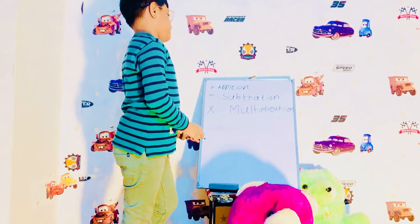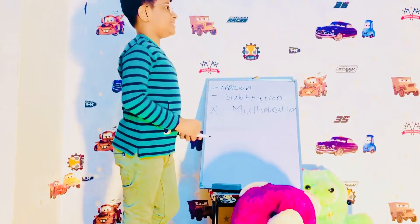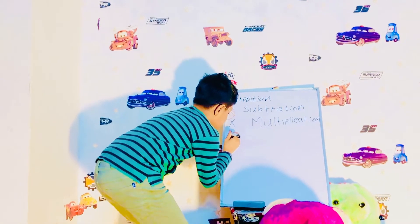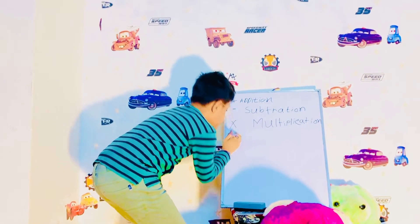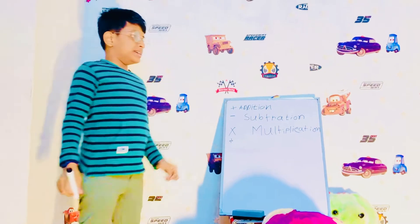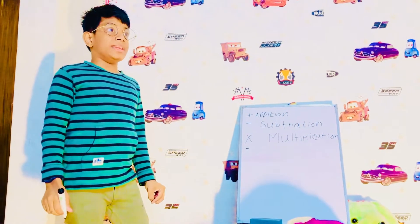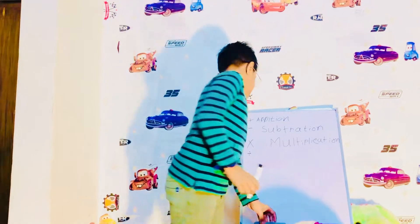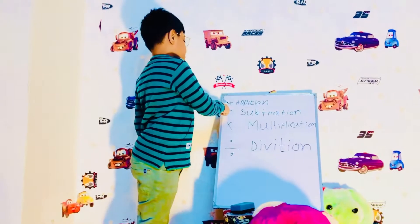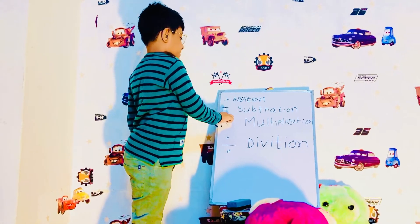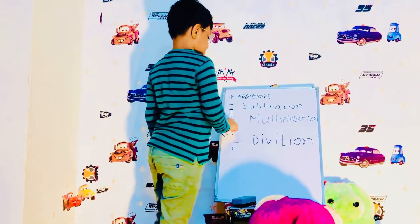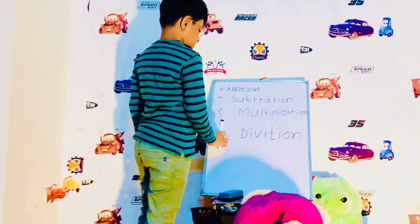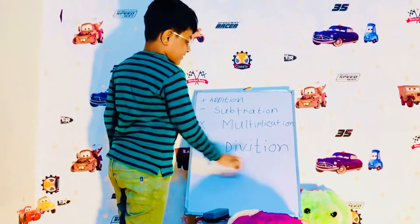So we're going to learn about division. This is the divided-by sign. Divide-by sign means division. Plus sign means addition. Minus sign means subtraction. Times or 'into' means multiplication. Divide-by means division.